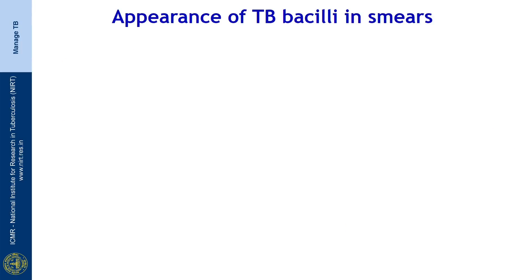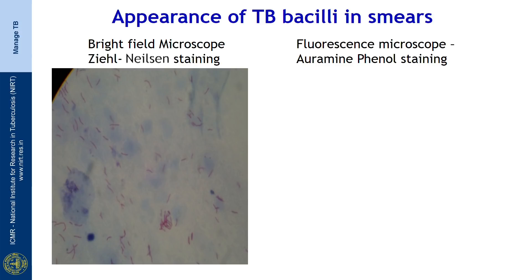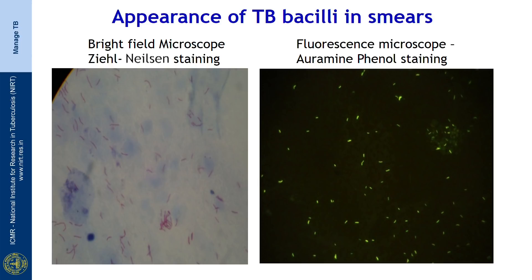How does the organism appear in the smear under the microscope? When the smear is stained using the Ziehl-Neelsen staining and visualized under bright field microscope, the organism appears as a bright pink slender beaded rod against a blue background. When stained using fluorescent staining such as auramine phenol and visualized under the fluorescence microscope, the organism appears as a bright yellow rod against a black background.